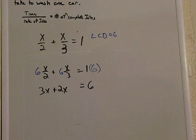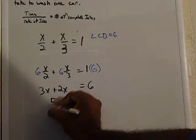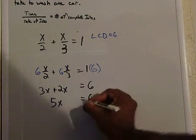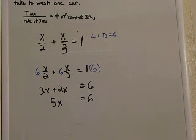So that's just three x plus two x equals six, so that's five x. Divide both sides by five, and that will give you x is equal to six over five.